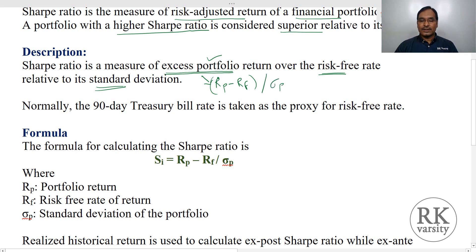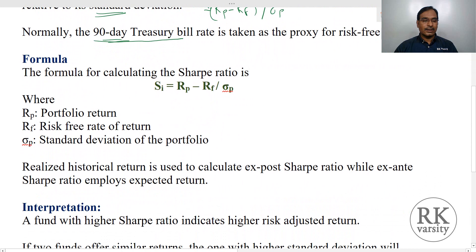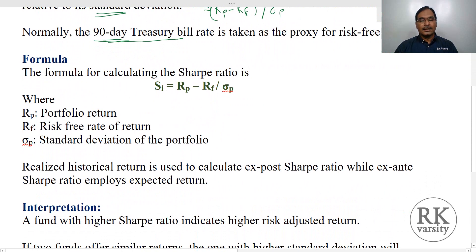Normally when it comes to the risk-free rate, we consider a 90-day treasury bill as a risk-free rate, because we want this to be for a very short time period. The yield or return on a 90-day treasury bill is considered as the risk-free rate. The formula to calculate the Sharpe Index is: return on a portfolio minus risk-free rate — which is your premium — adjusted with the standard deviation.